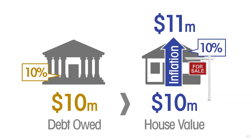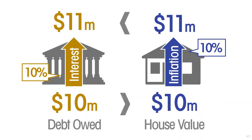Somebody knocks on your door and gives you 11 million dollars. You walk back up to the bank and say, 'I owe you some money — how much is it to pay off the debt?' The bank officer says, 'The principal is 10 million dollars and the interest at 10% is an additional one million dollars, so you owe us 11 million dollars.' That is exactly the amount you have from the sale of the house. You pay off the loan and you're back where you started.